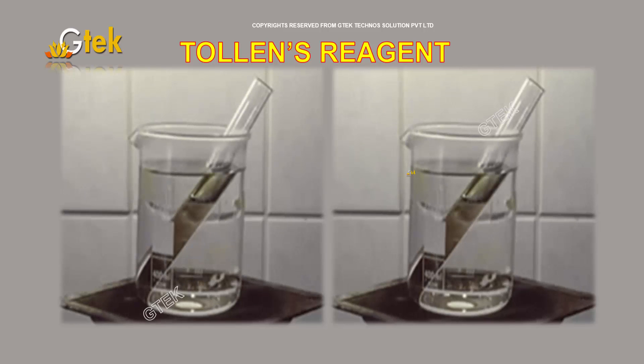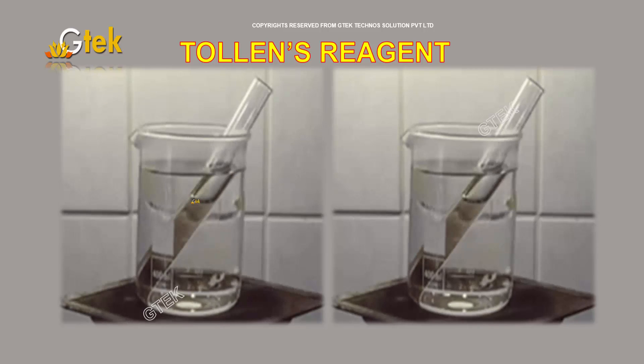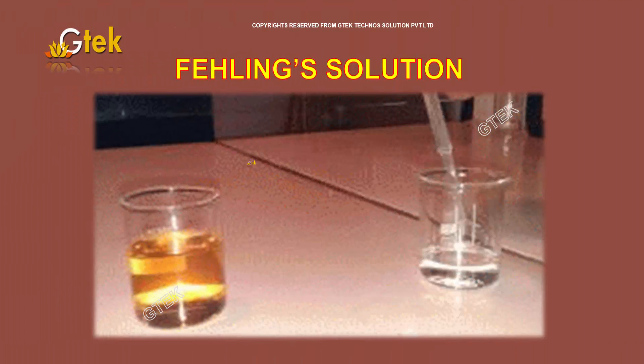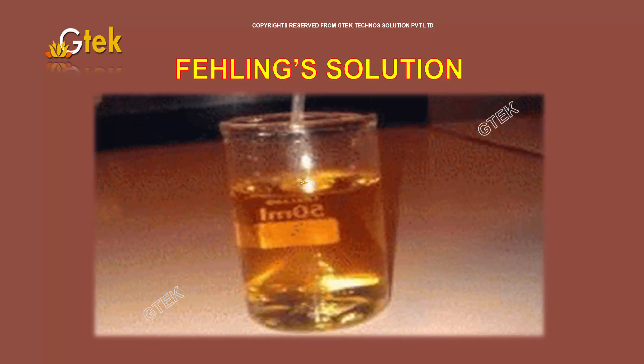This is an example for the Tollens reagent. It forms a silver ammoniacal color as shown here. This is an example for the Fehling's solution.